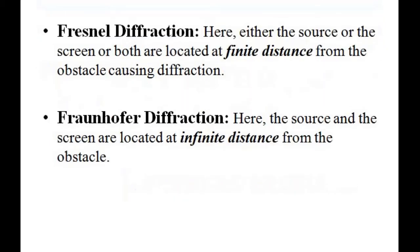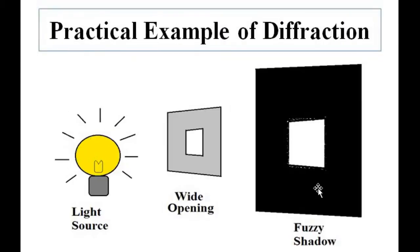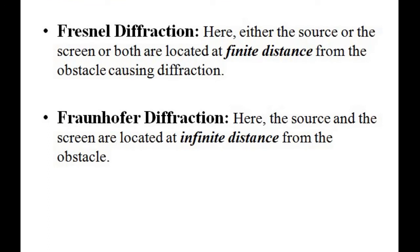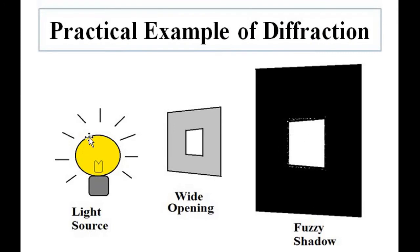In Fresnel diffraction, either the light source or the screen — or both — are located at a finite distance from the obstacle, meaning they are close or nearby. In Fraunhofer diffraction, both the light source and the screen, or at least one of them, are located at an infinite or far-away distance from the obstacle. This is what distinguishes the two types.